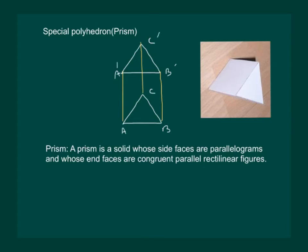So now we can define a prism as it is a solid whose side faces are parallelograms and whose end faces are congruent parallel rectilinear figures. Clearly, we can see that side faces are parallelograms and the end faces are triangles which are congruent and they are also rectilinear figures, which basically means that they are polygons.